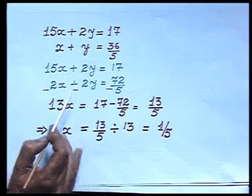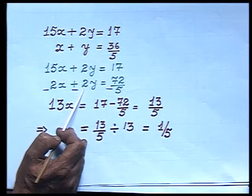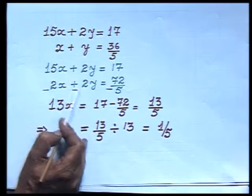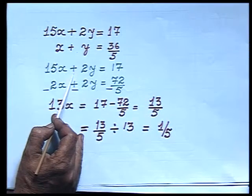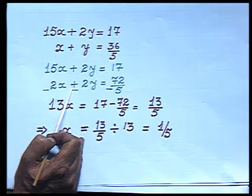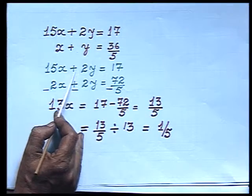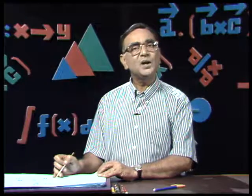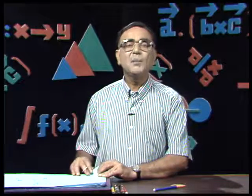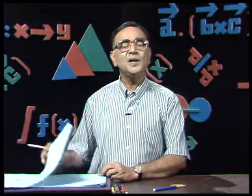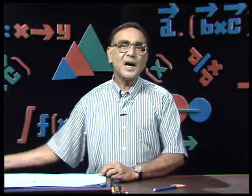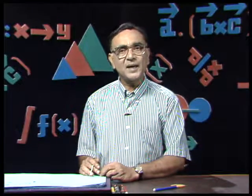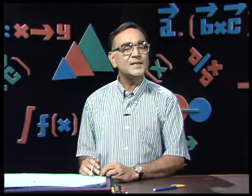Remember: when you have made the coefficients equal, if their signs are the same you must subtract; if they have different signs, simply add to eliminate the variable. But our original equation was not in terms of x and y — I changed it using the substitution 1/u equals x and 1/v equals y. So let us see how to get the values of u and v.